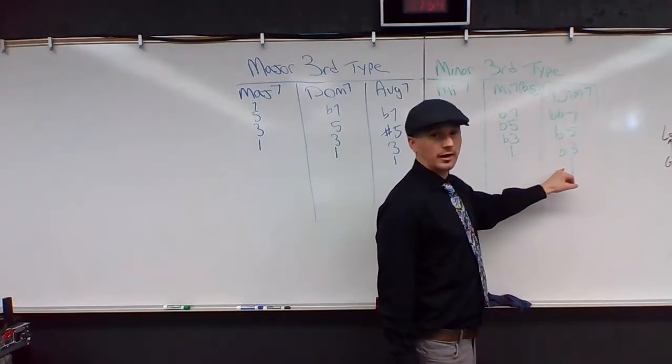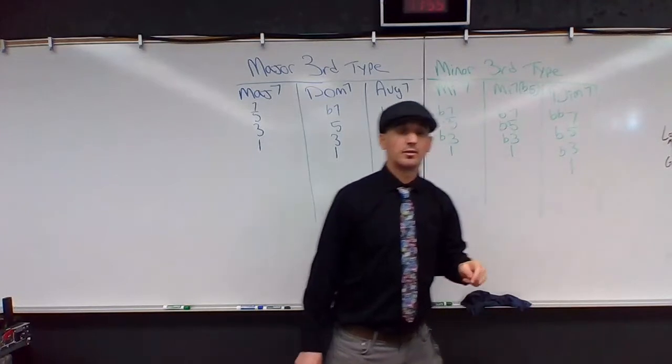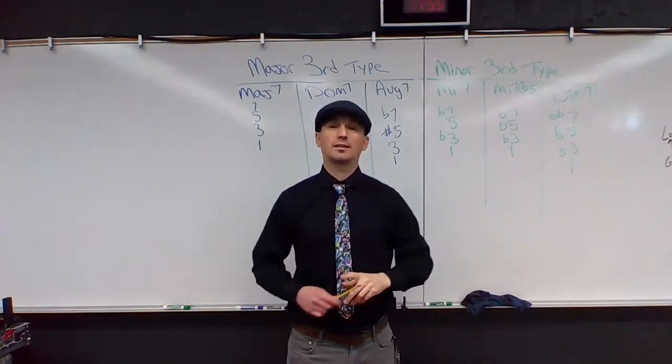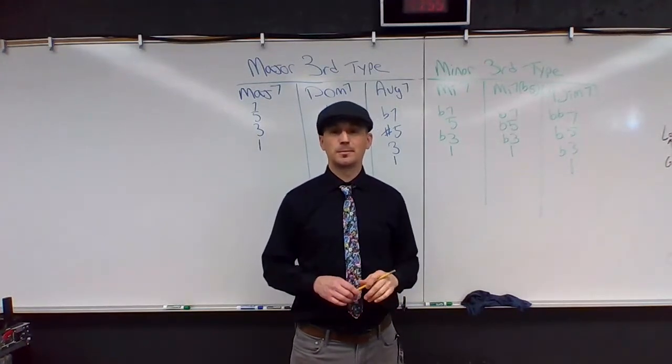And then our diminished seven. One, flat three, flat five, double flat seven. So the diminished seven has two flats on the seven. It might seem strange to you, but it makes sense if you were to look at the diminished scale.